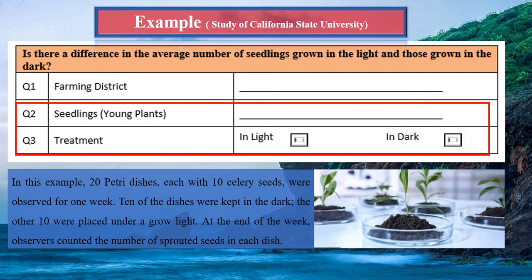In this study we use the California State University dataset. The variable is seedlings — also called young plants — and the treatment variable has two categories: light area and dark area. There are 20 petri dishes; in each dish 10 seeds are placed. Ten dishes are placed in a light area and 10 in a dark area, and the growth rate is compared between the two areas.